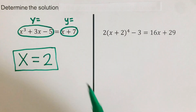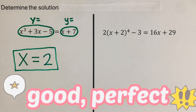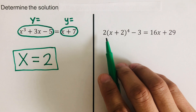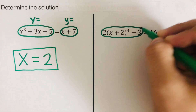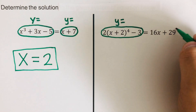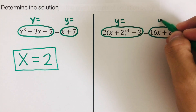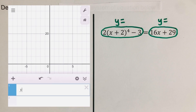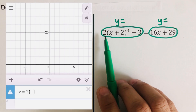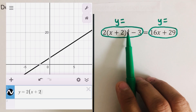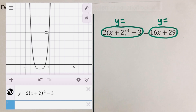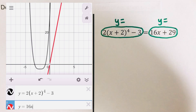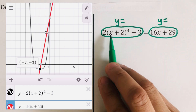When we solve this using the algebraic method, we also get x equals 2 — the same answer. Now let's move on to the next one. We are supposed to set this up on Desmos. The trick is to equal the left side to y and the right side to y as well, and put it into Desmos. The first equation would be y equals 2 times parentheses x plus 2, to the fourth power, minus 3. The second equation is y equals 16x plus 29. Both graphs meet at two points.